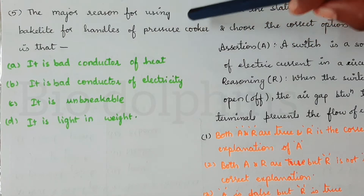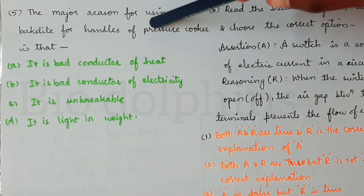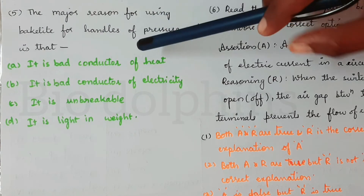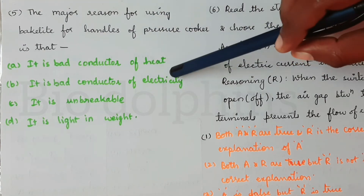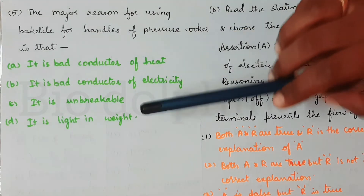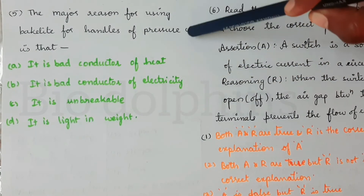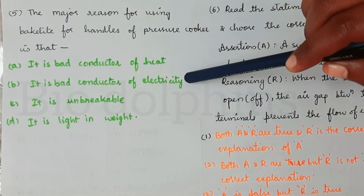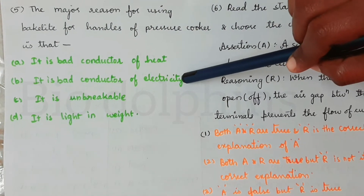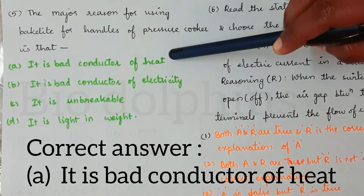Fifth question: the major reason for using Bakelite for handles of pressure cookers is that it is a bad conductor of heat. So the correct answer is option A — Bakelite is a bad conductor of heat.